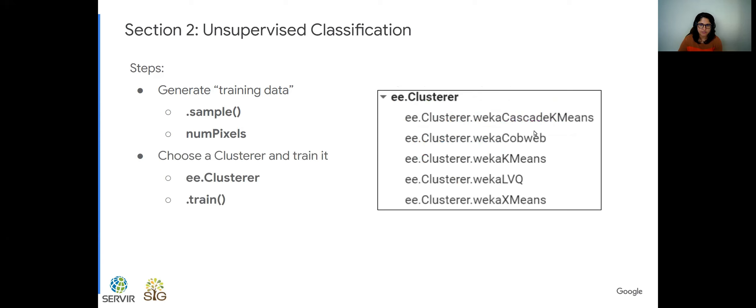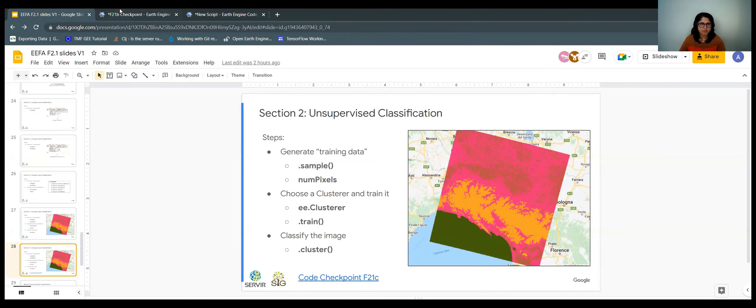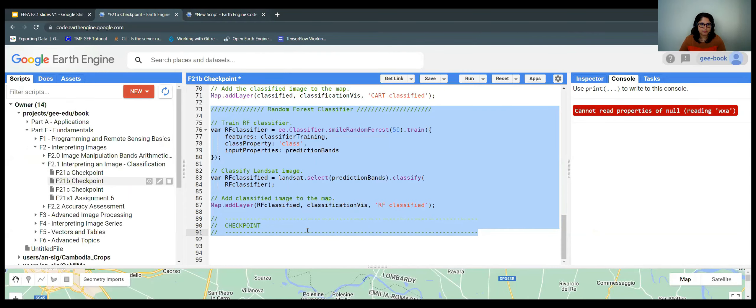Then we choose the clusterer and training. So there are different options here. This is under the ee.clusterer object. We work with the k-means for now. And we use the train function as we've seen. And then we classify the image as well. And you can see they have different colors. I'm going to talk about this later. So we can go ahead and work with this checkpoint. This is the last checkpoint. So I'll go back here to the book repository.